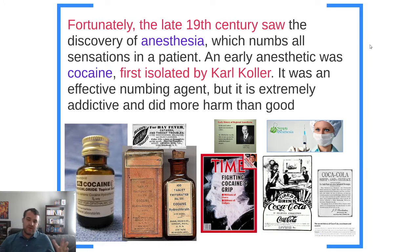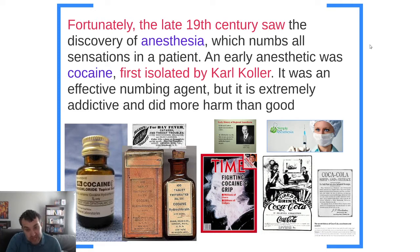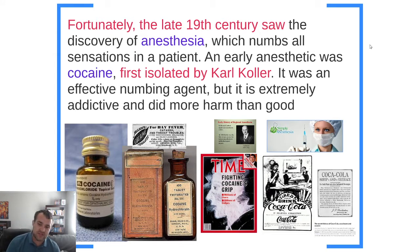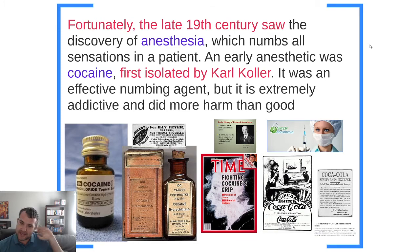They came up with some new medicines during this time period too. They discovered medicines collectively known as anesthesia, which numbs all sensations of pain in a patient. One of these early anesthetics was cocaine, developed by a German named Karl Koller — an extremely effective numbing agent. People took cocaine and they felt no pain at all. But they also found out it was really addictive. People started to abuse this drug and use it all the time, and cocaine has done more bad than good in our world — but it was originally used by doctors.